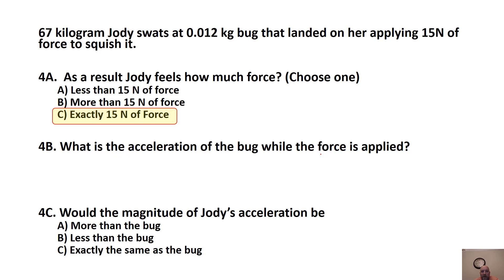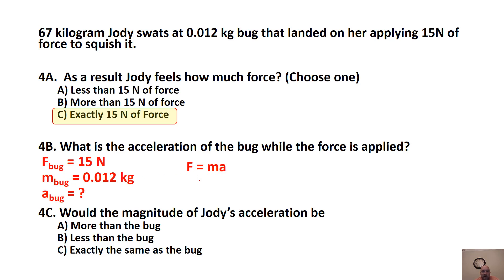What's the acceleration of the bug? Thinking only about the bug: F = 15 N, mass = 0.012 kg. Using F = ma: a = 15/0.012 = 1250 meters per second squared.